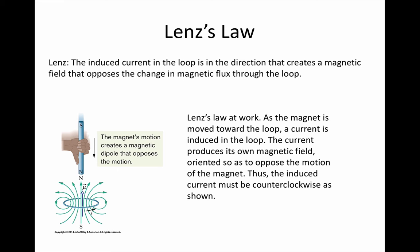In the same way, if we try to move the magnet away, the current changes direction to create a south pole at the top to attract the magnet and make it harder to remove it. It works like friction, always opposing the motion.